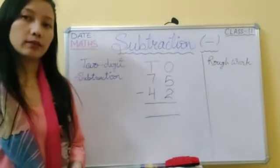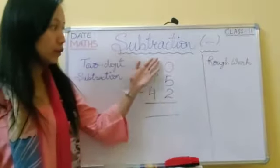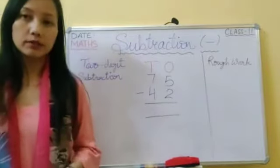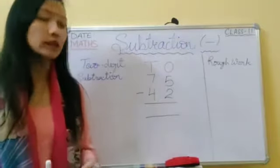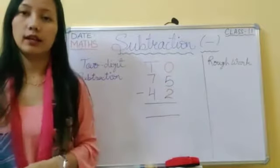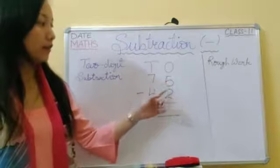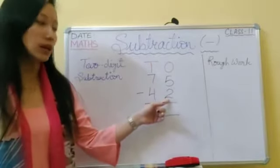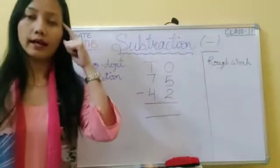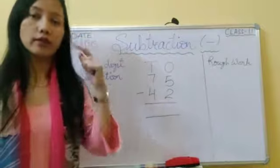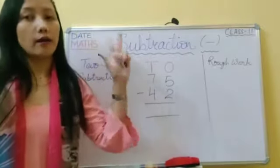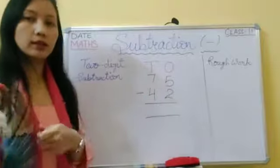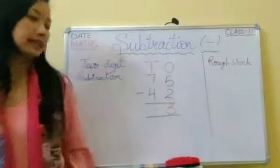Now let's subtract two-digit numbers. We have 75 minus 42. Whenever you subtract, always start from the ones digit. In the ones column we have five and two. Keep the smaller number two in your head and count on to five: two, three, four, five. Three is the difference. Five minus two — the answer is three.